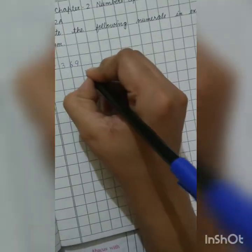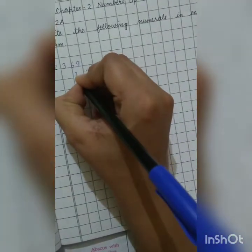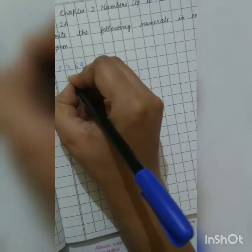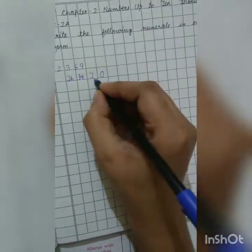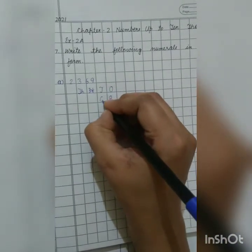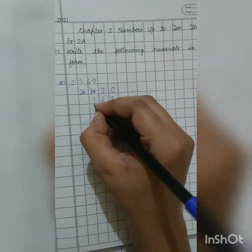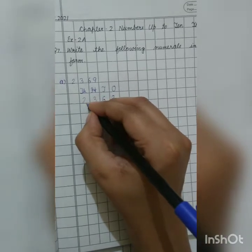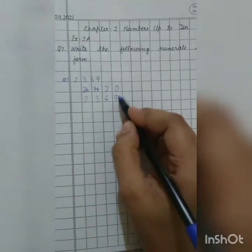what we have to do? We have to arrange them according to the place values. 1's, 10's, 100's and 1000's. 9 is at 1's place. 6's, 10's, 3's, 100's and 2's, 1000's. So 9 ones.